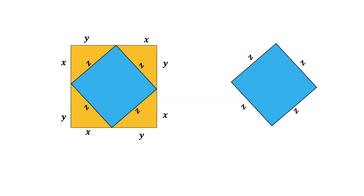Now we are going to consider the area of the bigger square. The area of the bigger square will be equal to the area of the smaller square plus four times the area of the shape — and this shape is a triangle. So the area of the bigger square equals the area of the smaller square plus four times the area of the triangle.